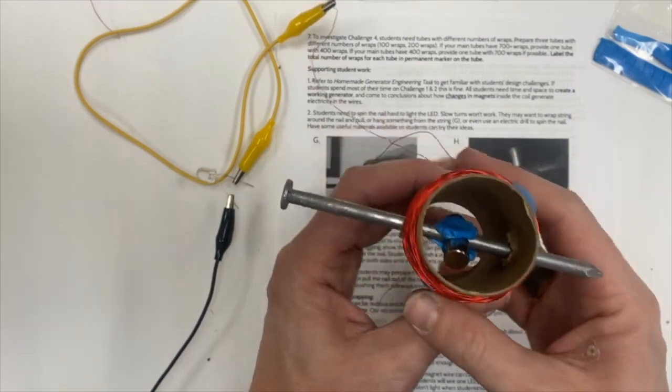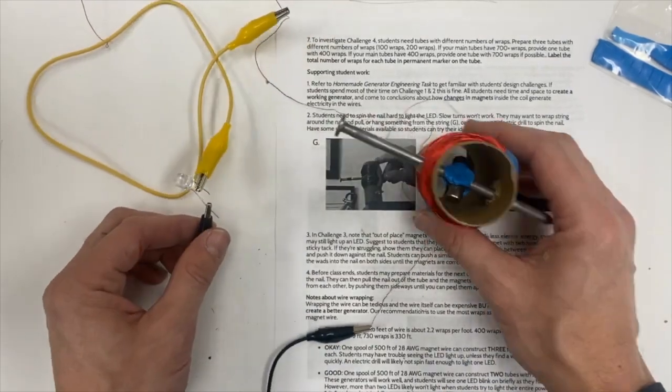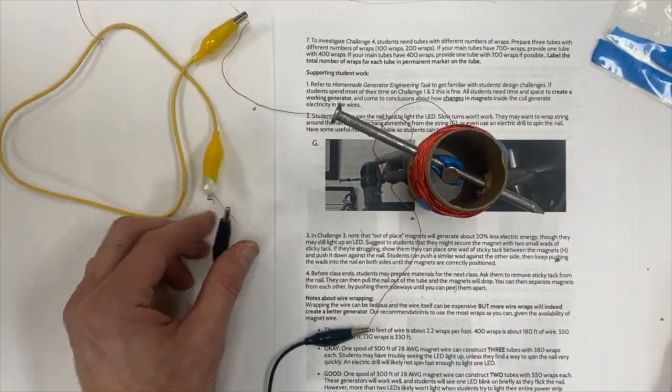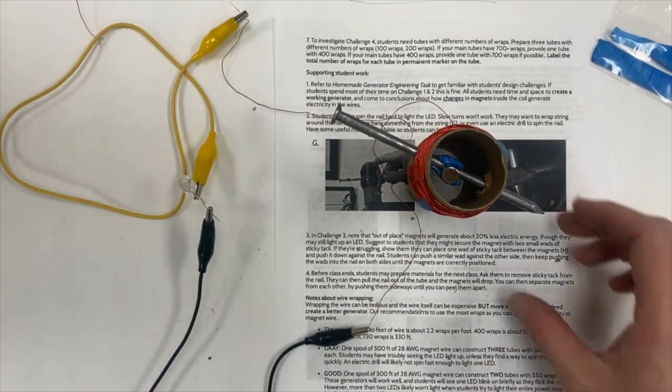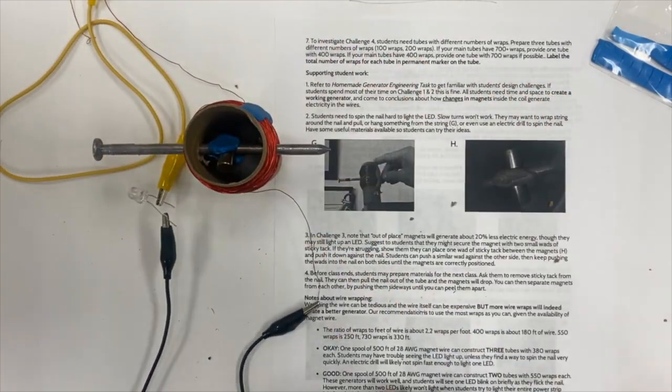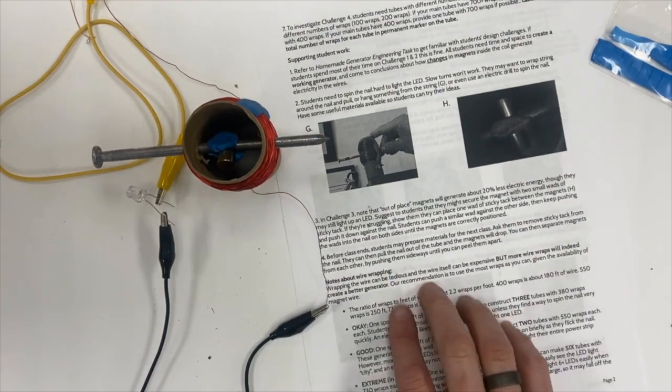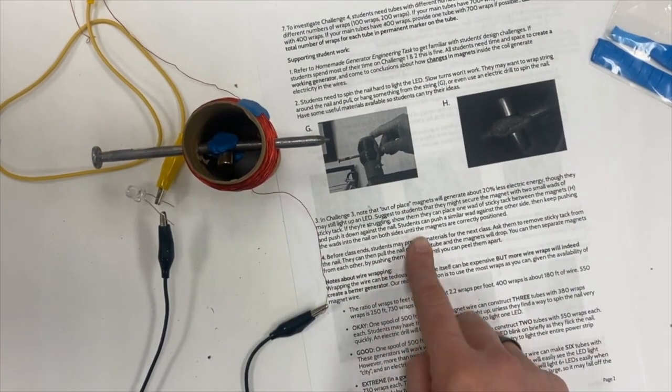This does affect the efficiency of the generator quite a lot. Making that change will increase the output of the generator by about 20 percent, which is significant. So when students end class, you should encourage them to dismantle these generators so that the next class can use them.